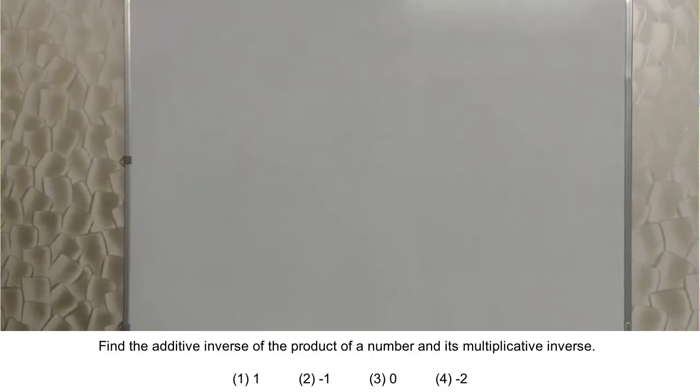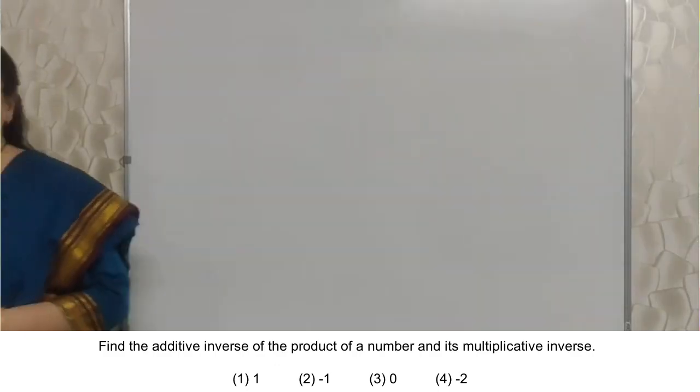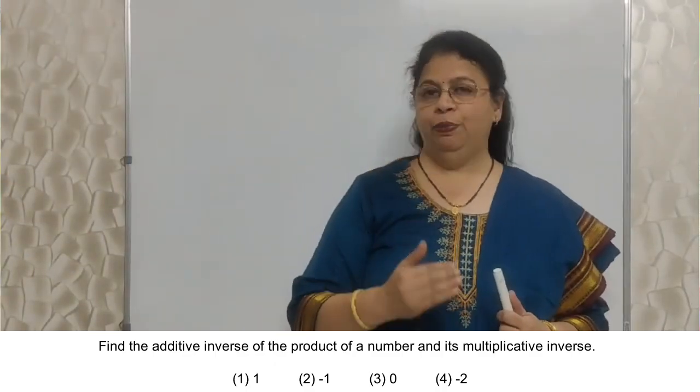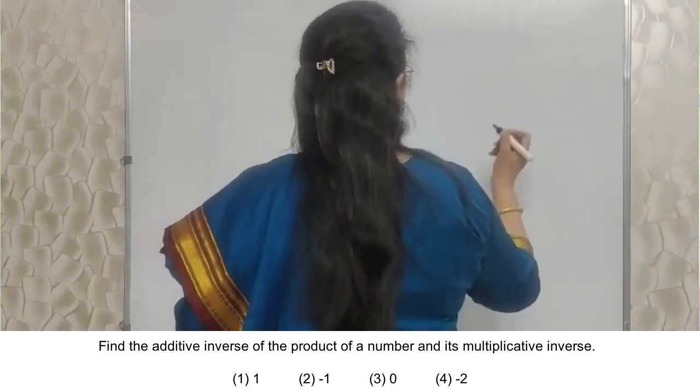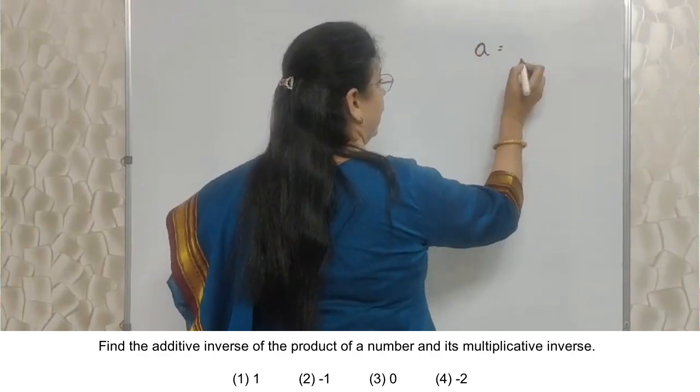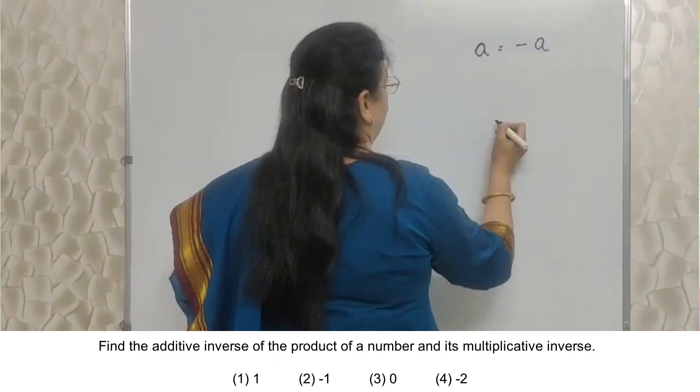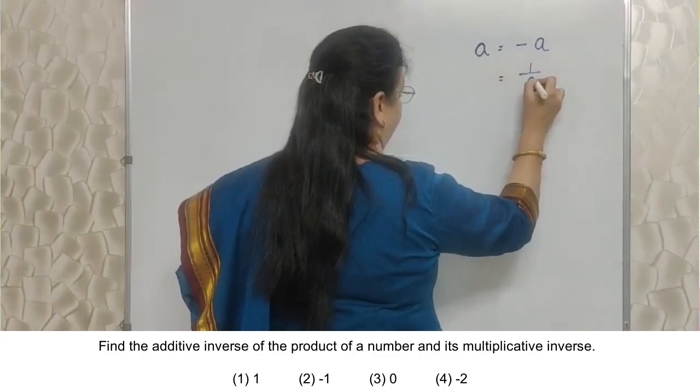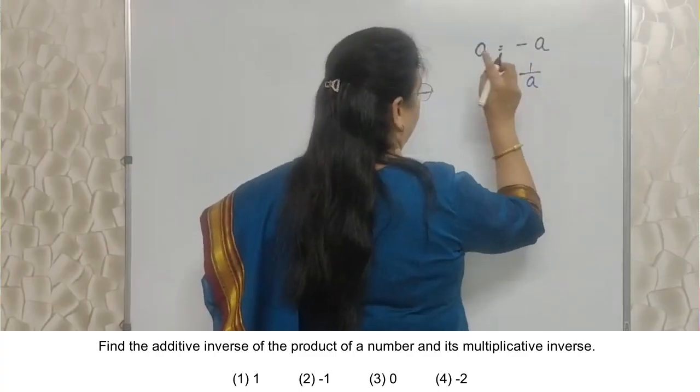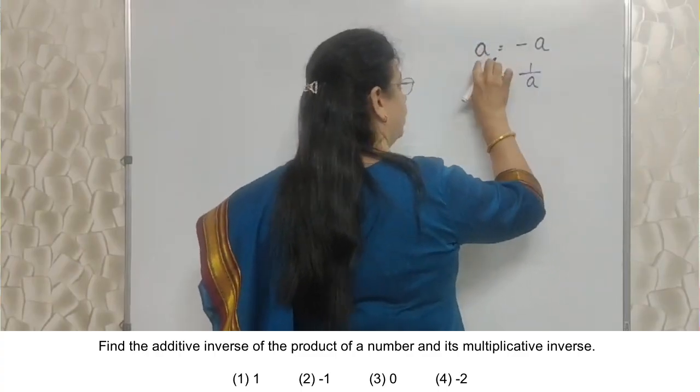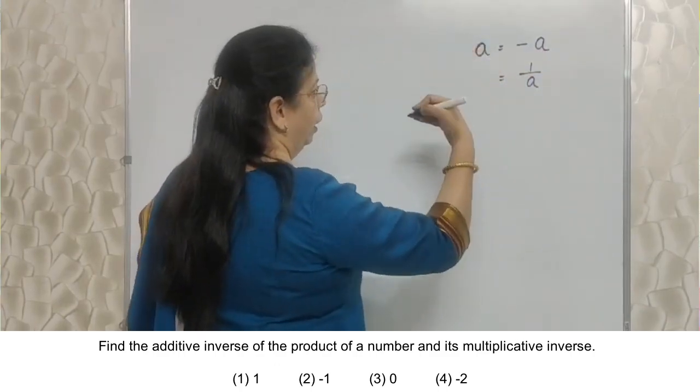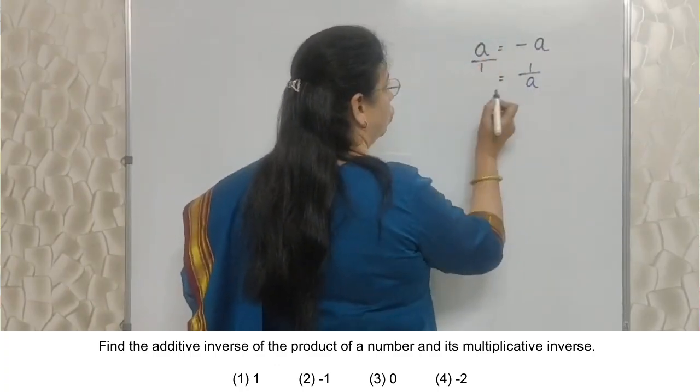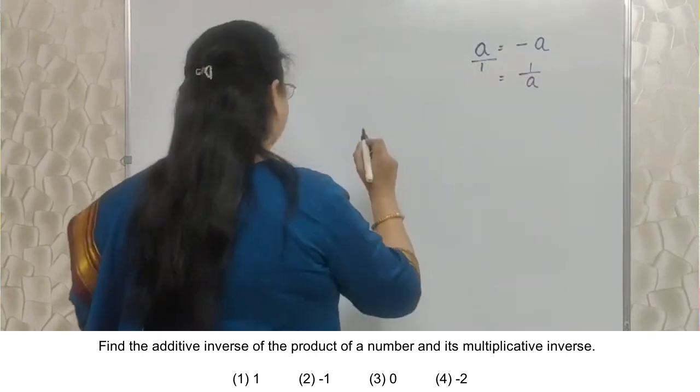Students, read the next term properly. Find the additive inverse of the product of a number and its multiplicative inverse. Here, the concept of additive inverse and multiplicative inverse plays a very important role. You are supposed to know what is additive inverse and what is multiplicative inverse. I will just brief. If the number is A, its additive inverse is minus A. And multiplicative inverse is 1 upon A. Additive inverse may sign change hota hai. And multiplicative inverse may numerator becomes denominator, denominator becomes the numerator. This is A upon 1. So multiplicative inverse will be 1 upon A.